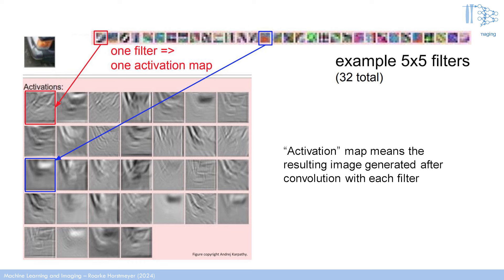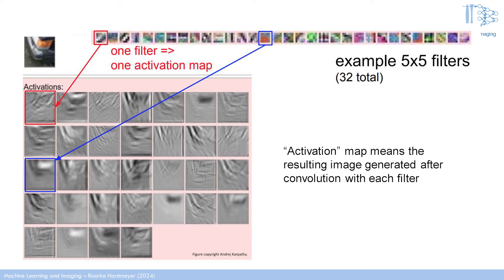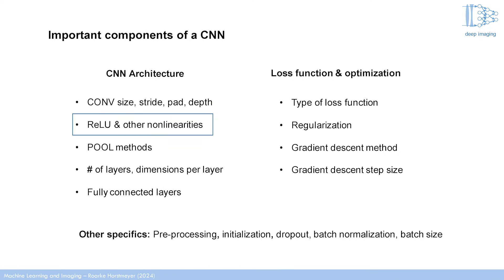The first layer creates 32 individual images all stacked together as independent channels — you start with one image and end with 32. Now let's talk about the non-linearity. After convolution, we need to apply a non-linearity; otherwise we won't get performance gains. If you have just a series of linear operations repeated many times, it's still just a linear operation and a linear classifier. So after each layer, a non-linearity is included. Here are the most common ones.